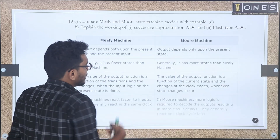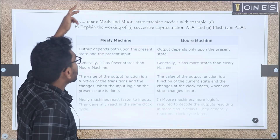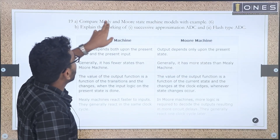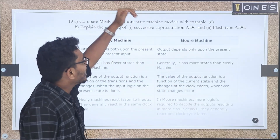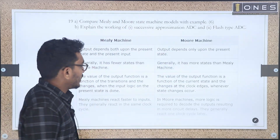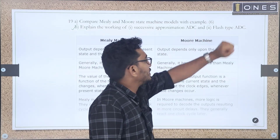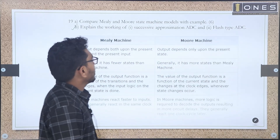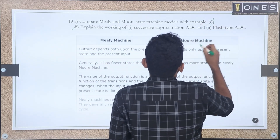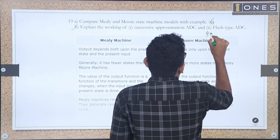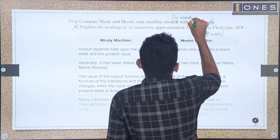We will discuss the questions. There are two parts: A question and B question. The A question is a theory kind of question: Compare Mealy and Moore State Machine Model with Example — that is 6 marks. The B part is: Explain the working of Successive Approximation ADC and Flash Type ADC — that is 8 marks. Two questions have come from this module.